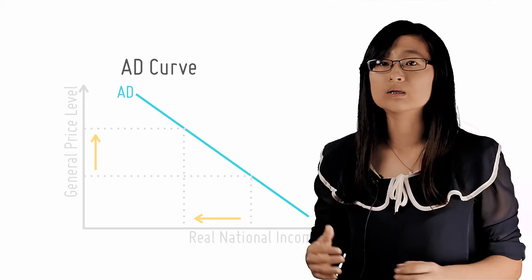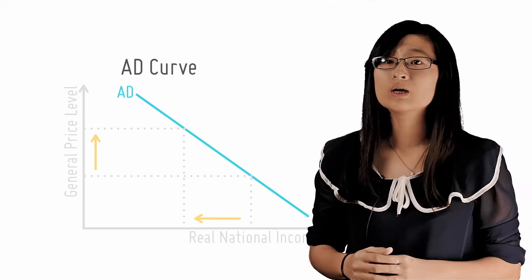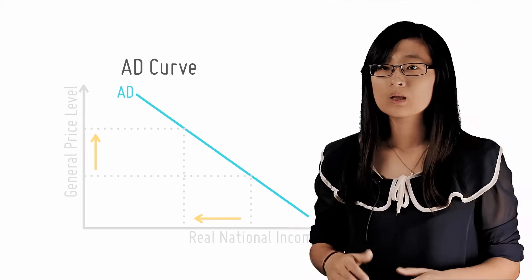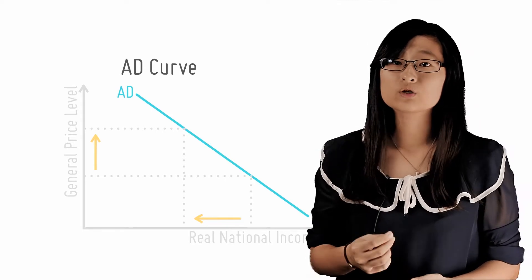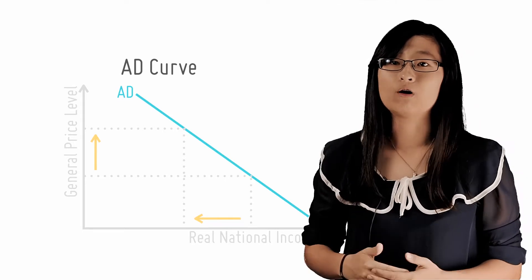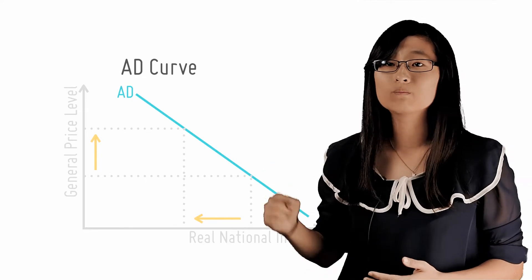So since everybody else in the economy feels the same, consumption in the whole economy falls. And since C is a component of AD, national expenditure and thus output falls. So this causes the AD curve to slope downwards.